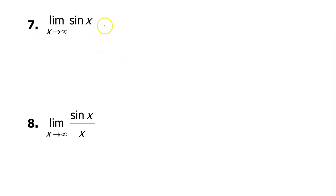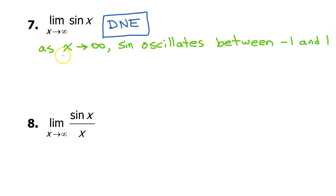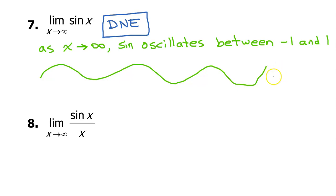For problem number seven, there is no work to show. You should be able to just look at this and see that the limit does not exist. As x approaches infinity, sine oscillates between negative one and positive one — it just keeps going up and down between those values forever. Because it never levels off at a particular value, the limit does not exist.